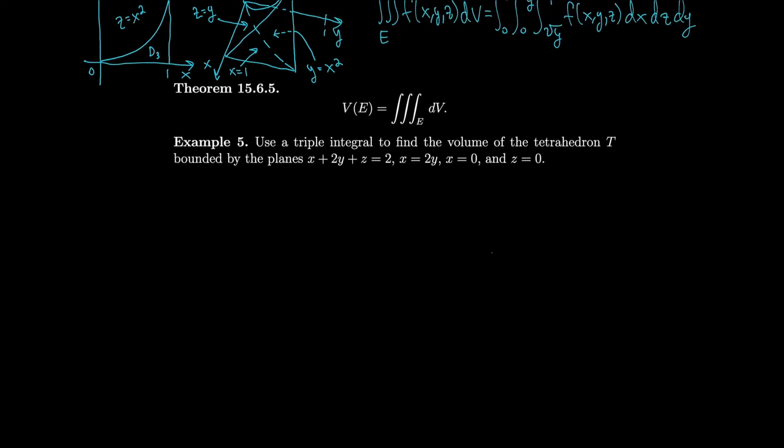Similar to how a double integral can be used to find area, we can use a triple integral to find volume even though the integrand lives in a fourth dimension. We simply integrate 1 and get the volume. Let's do an example — we already did this in section 15.2, example 4, so let's redraw it.